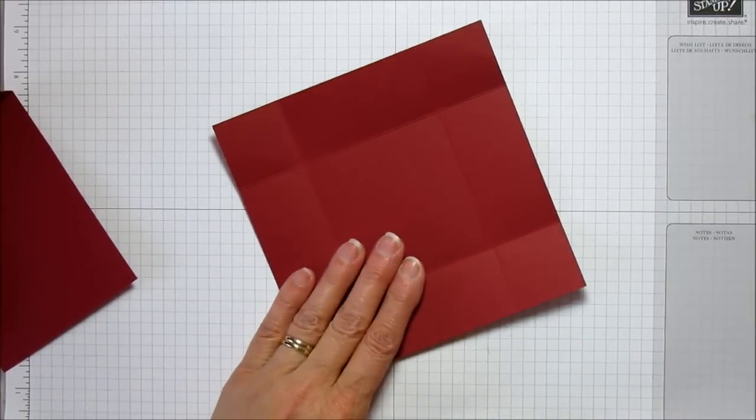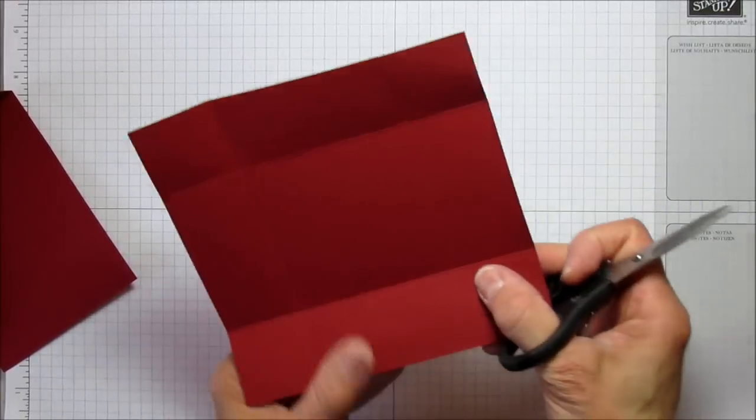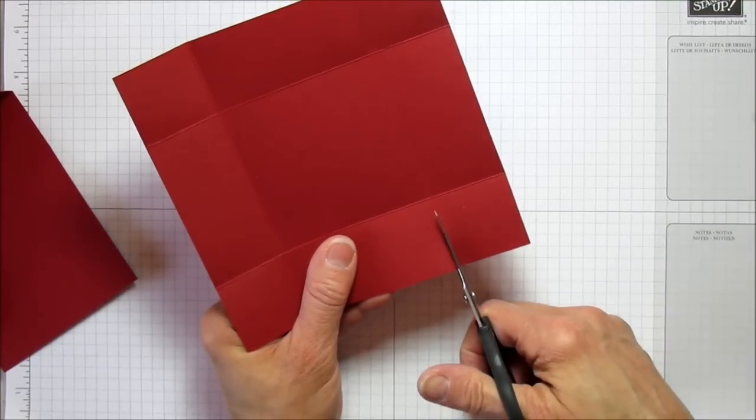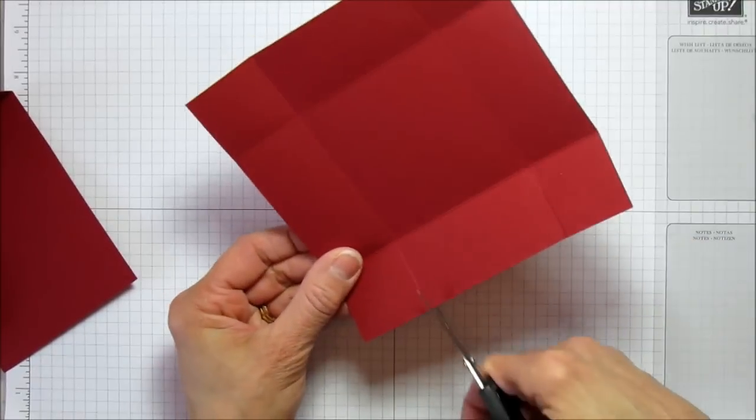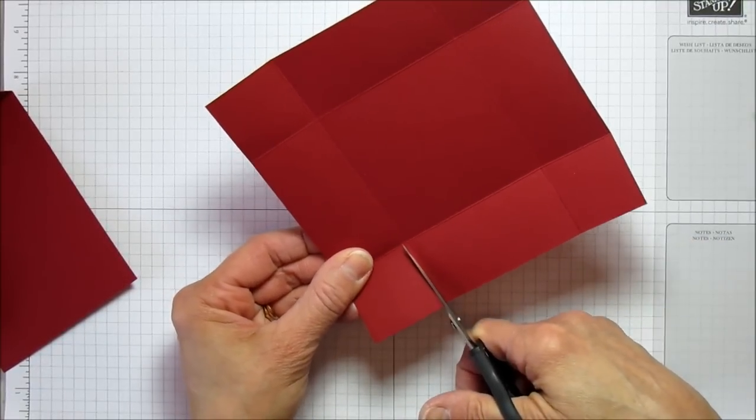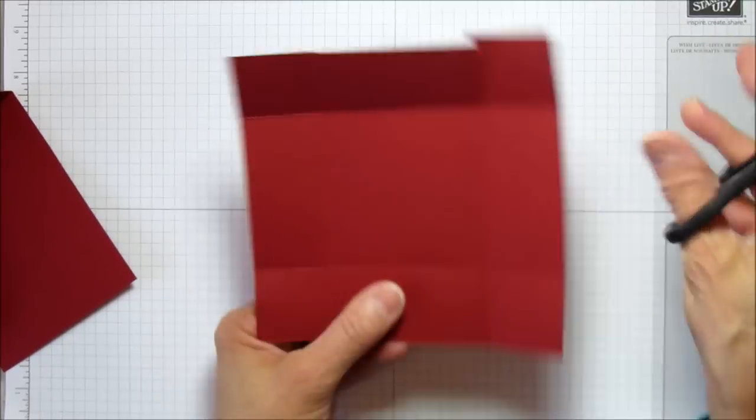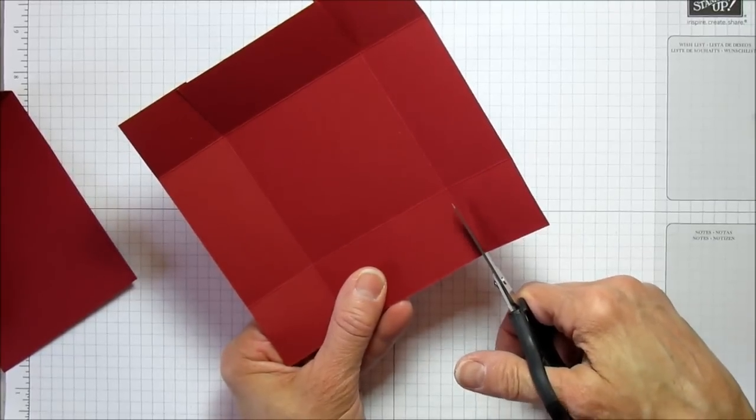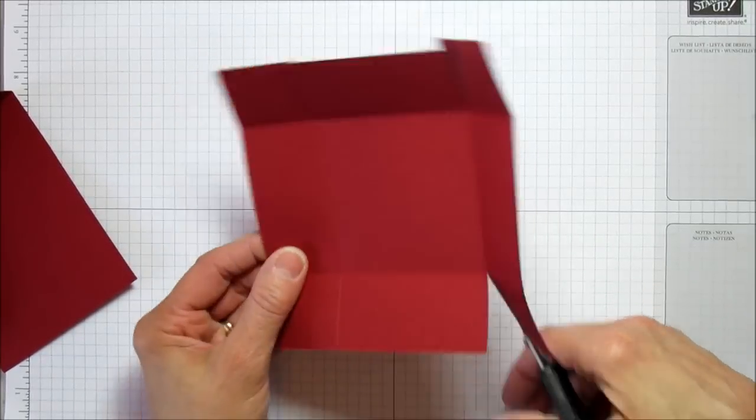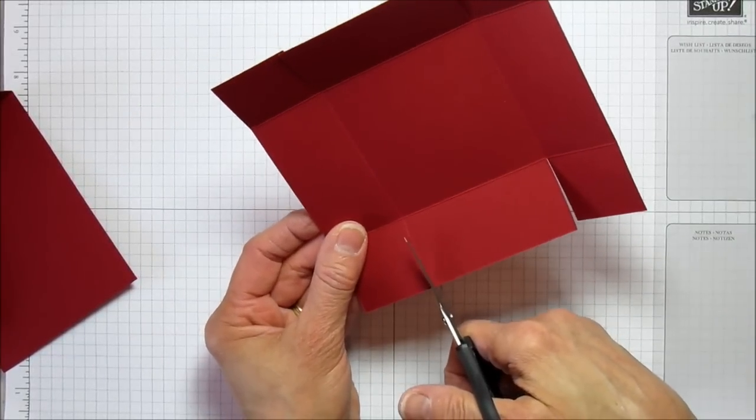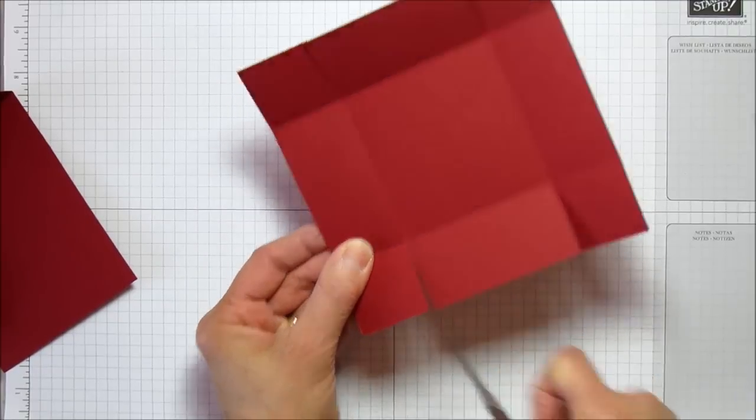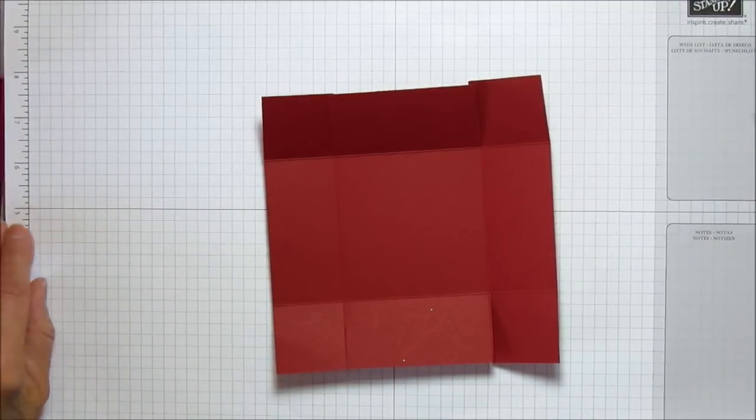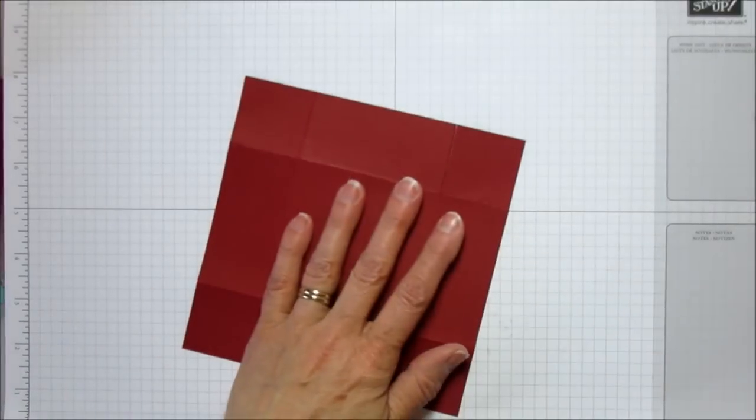Now we're ready to cut this bottom piece for our box. We're just cutting up this score mark to the first one, then this score mark to the first. Turn it all the way around and do this side exactly the same - you're just creating flaps.